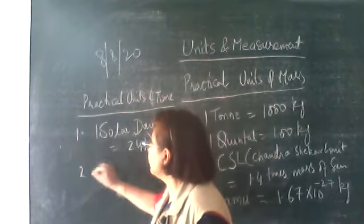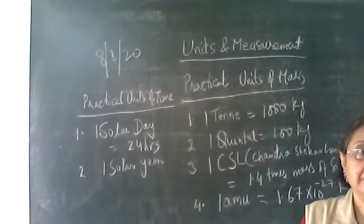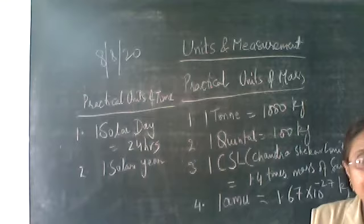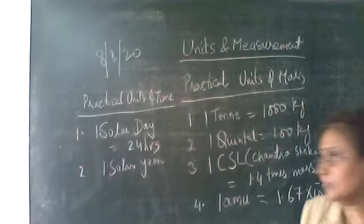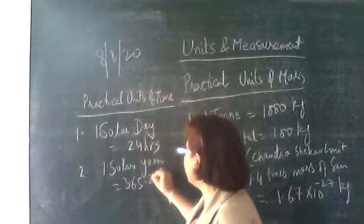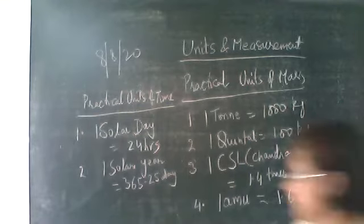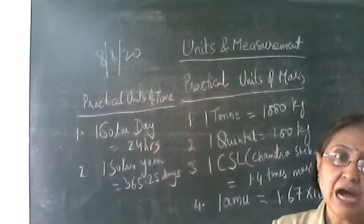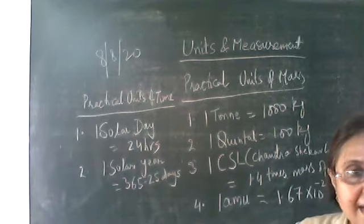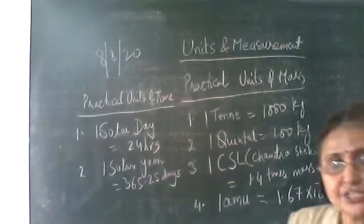Another bigger unit of time is the solar year, which is the time taken by the earth to complete one revolution around the sun. One solar year is equal to 365.25 days. The extra 0.25 day accumulates over four years to make one full day, which is added in February — that year is called a leap year.